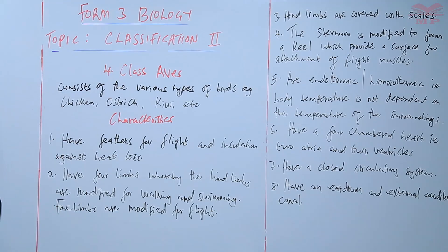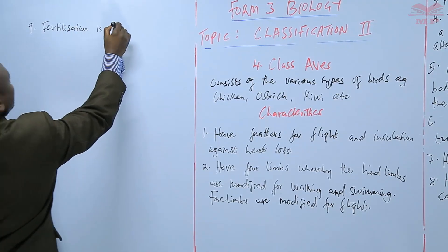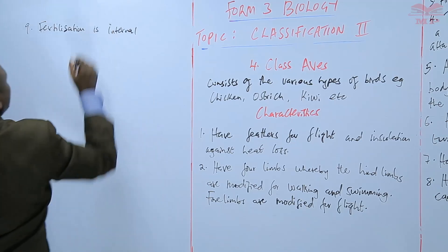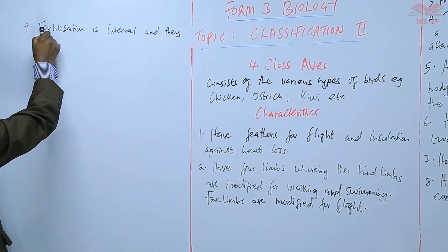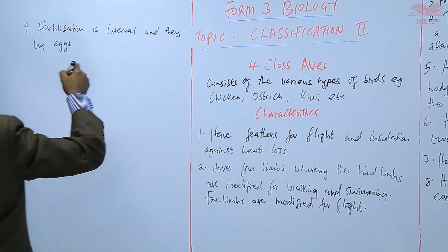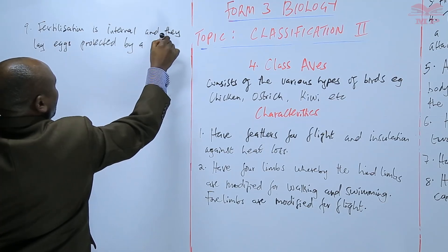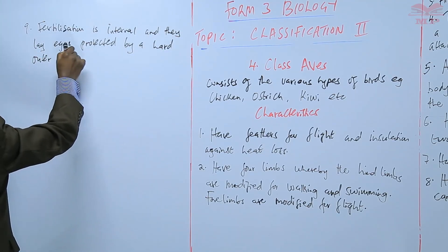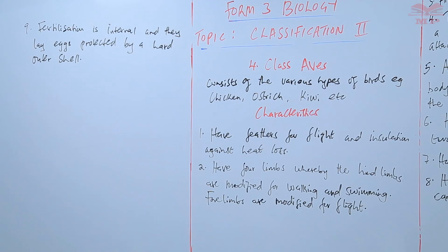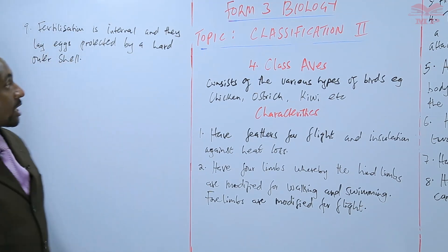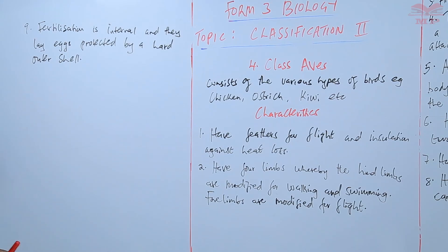In terms of their fertilization, fertilization is internal, and they lay eggs protected by a hard outer shell. So fertilization occurs internally, after which they lay eggs that are protected by a hard outer shell. This is unlike what we saw in the case of amphibians and fish, whereby the fertilization was external.